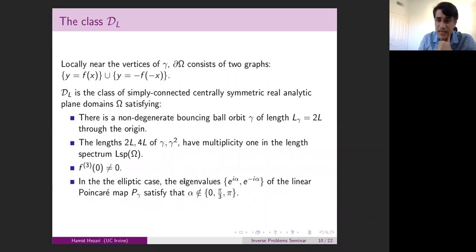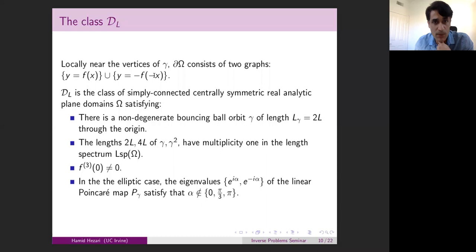The orbit is elliptic if the eigenvalues are of the form e^{iα}, e^{-iα}, with α not zero since we assume non-degeneracy. It is hyperbolic if the eigenvalues are real. Now I can introduce the class on which we show the spectrum map is one-to-one. Locally near the bouncing ball orbit, aligned on the y-axis, the boundary on top and bottom is graphical on the x-axis: on top I use f, and because it's centrally symmetric, the bottom function is minus f of minus x.